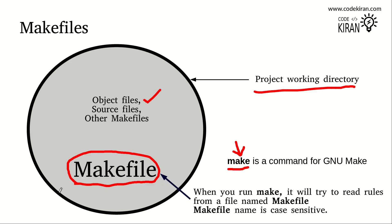Each object file represents a feature in the big project and may contain source files and other makefiles. Just as in C language you can include files, you can include makefiles inside another makefile, so that if any rule is not found in the current makefile, GNU make will search in the other makefiles and the build can be completed without interruption.